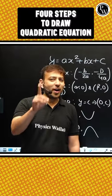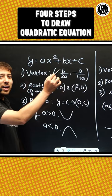Four steps to draw any quadratic equation. First of all, if the quadratic equation is ax squared plus bx plus c,